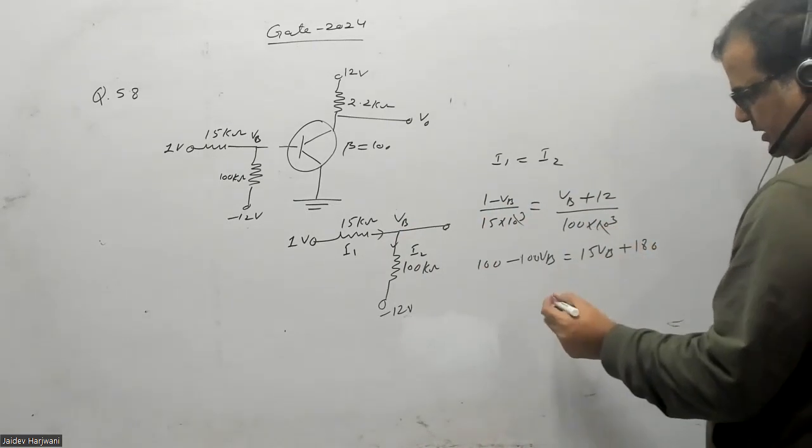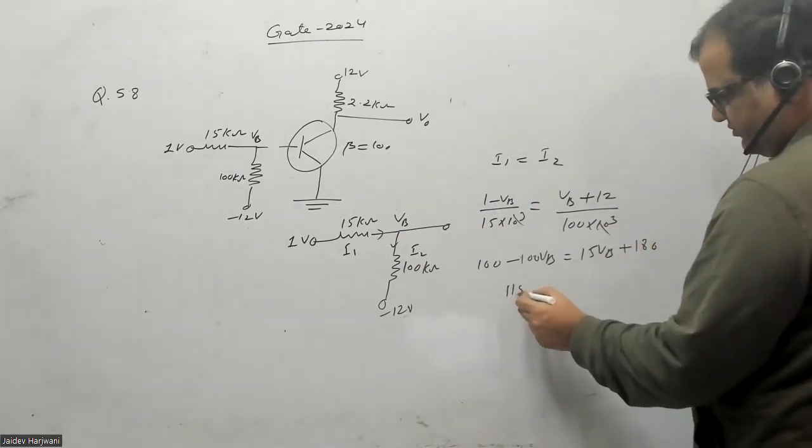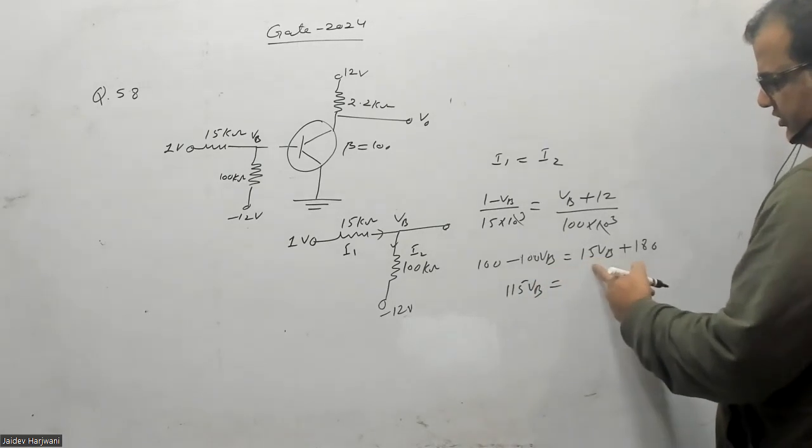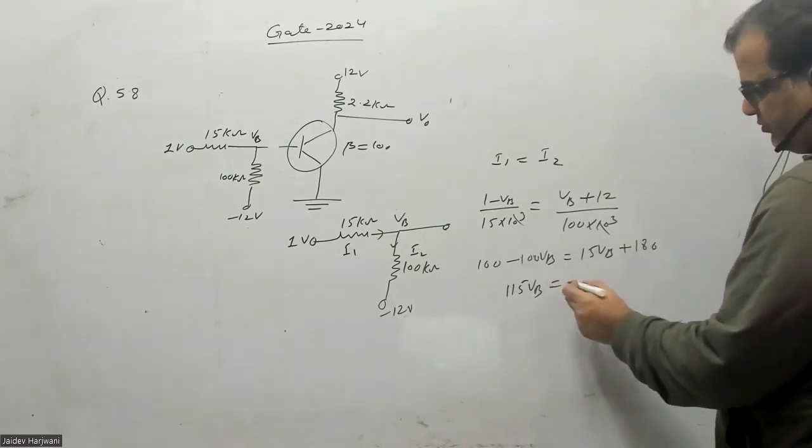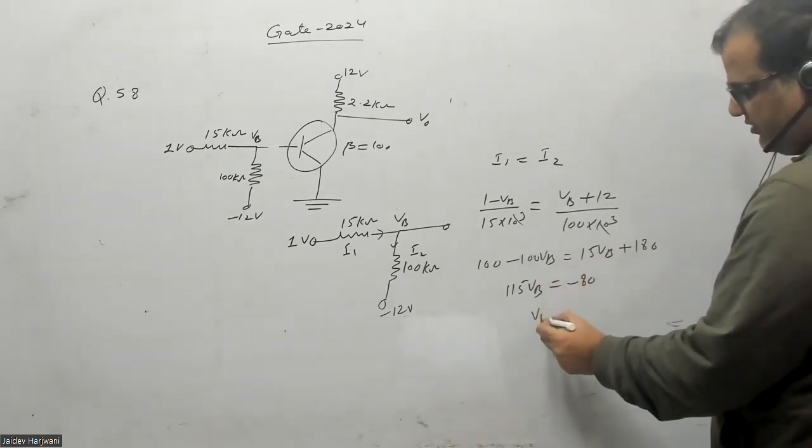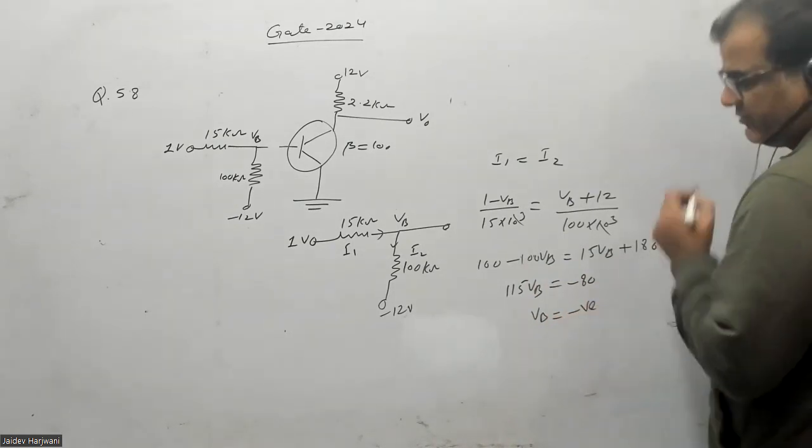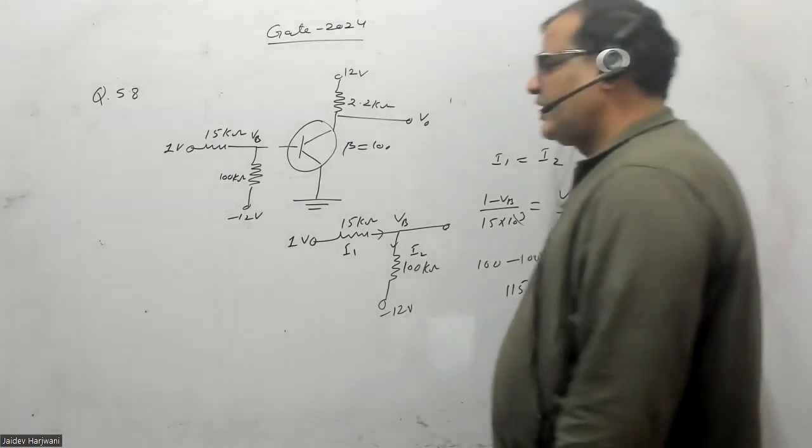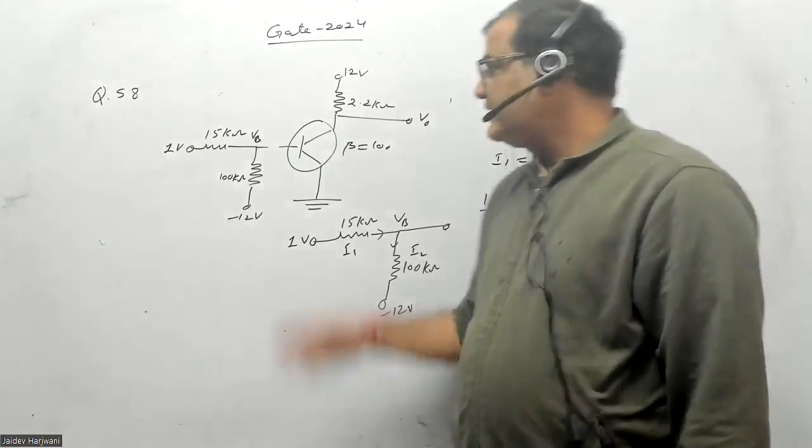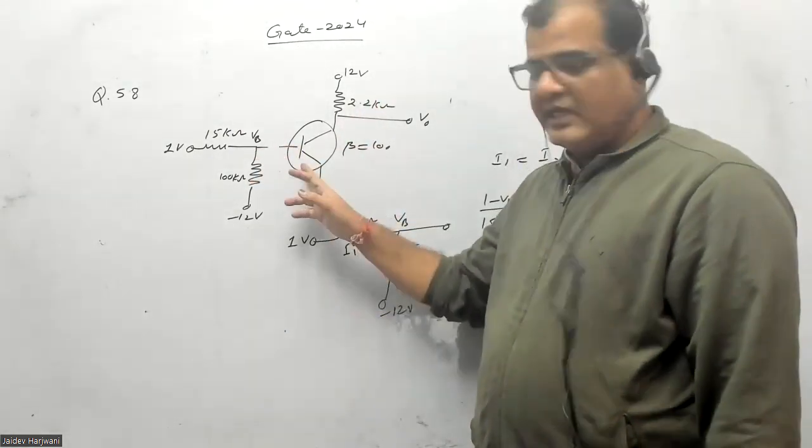If I multiply 15 to 12, that's 180. Now if I solve this one, this comes out as 115 VB equals to minus 80. That is, my VB is negative.